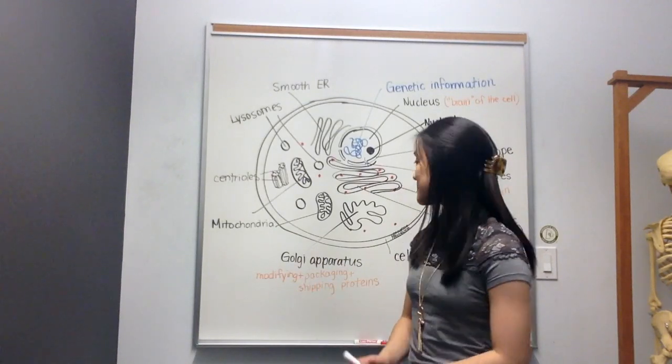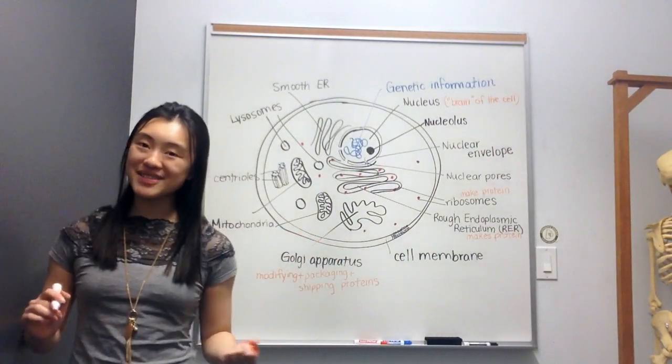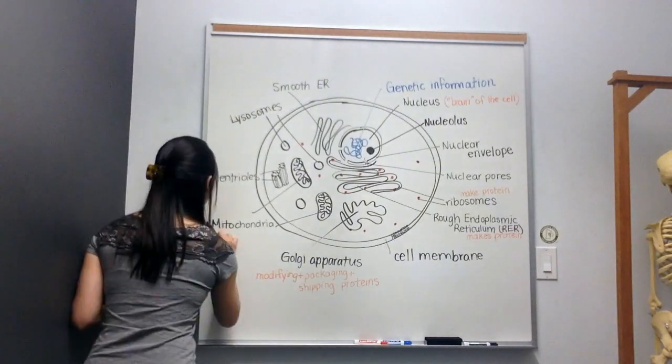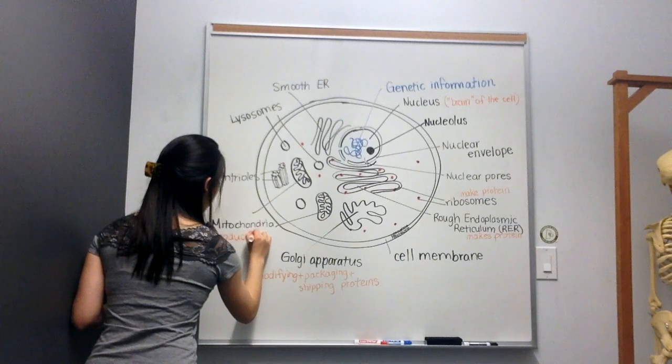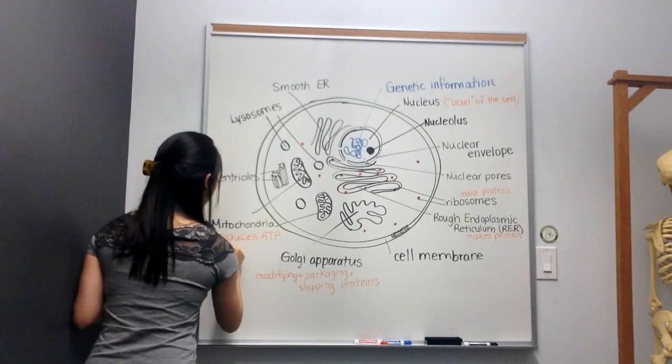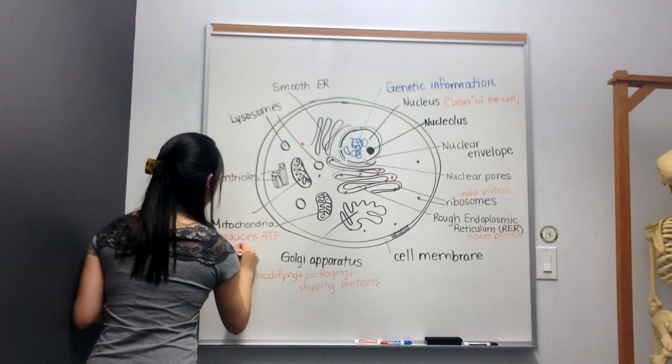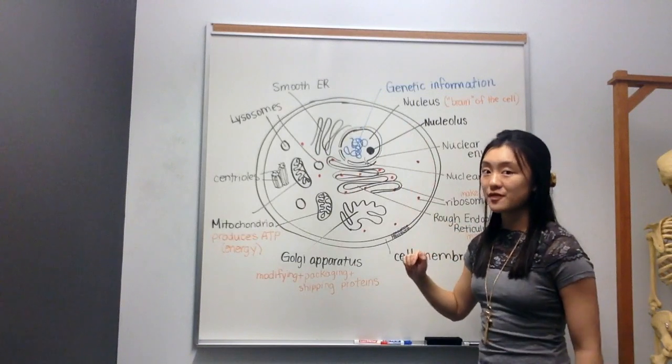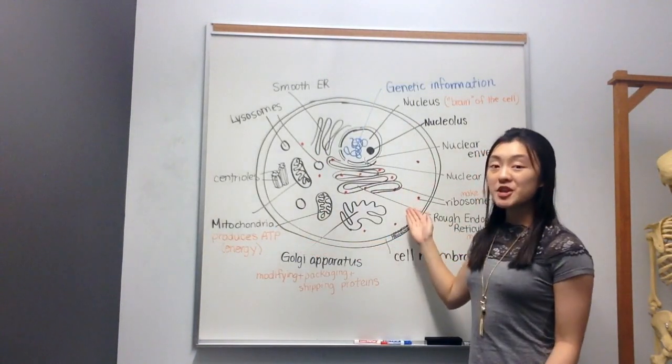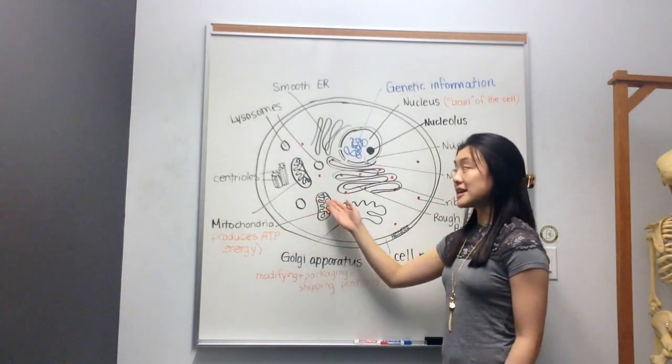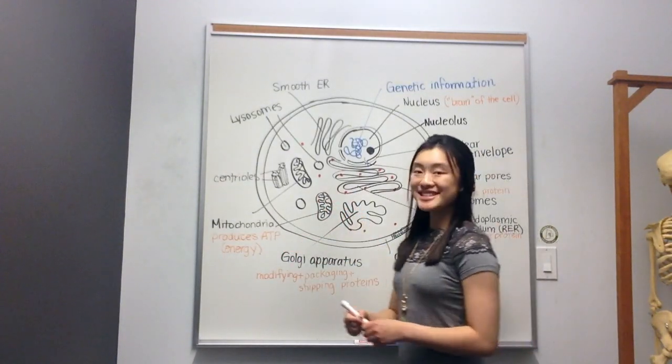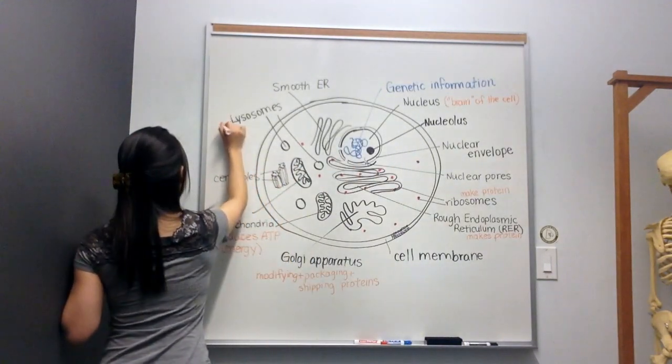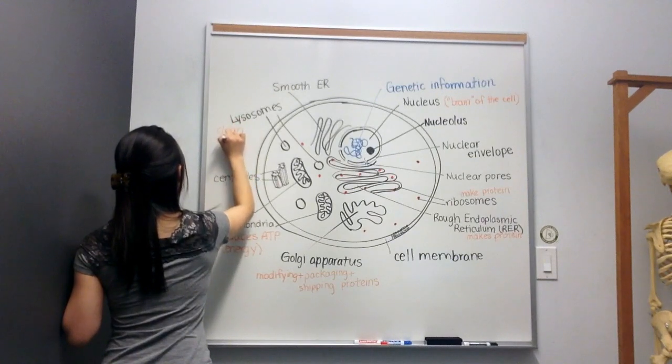The mitochondria, you probably know, is the powerhouse of the cell. And what it does is it produces energy in the form of ATP. Produces ATP. And I'll do in brackets, energy. This is extremely important because without ATP, the nucleus wouldn't be able to function. Without energy, the ribosomes couldn't make proteins. Without energy, the lysosomes couldn't perform their role, which is to clean cell debris. I'll make a note of that here. Cleaning cell debris.